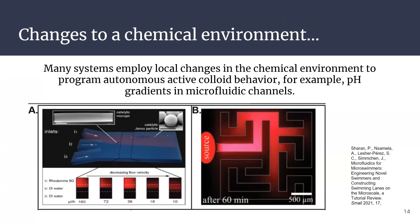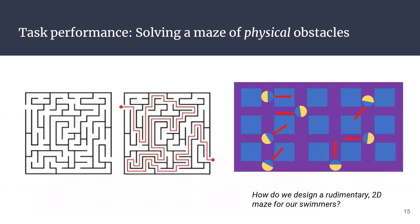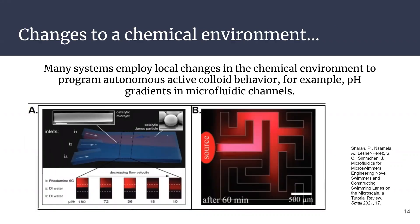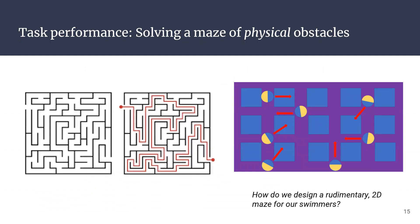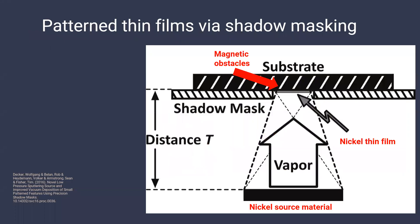Other work has used local chemical environmental changes — setting up a maze with a pH gradient, where the particle follows the longest gradient path to solve the maze, extracting different particle velocities. But this is rudimentary and difficult to reproduce. My idea is to create a maze using changes to the physical environment instead — taking advantage of the particles' offset magnetic dipole moments. We put them in a maze full of physical objects caused by distortions in the local magnetic field. We make this maze using physical vapor deposition with a shadow mask — basically a stencil — depositing metal onto the stencil, removing it, and you're left with a pattern.